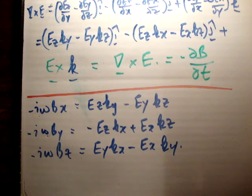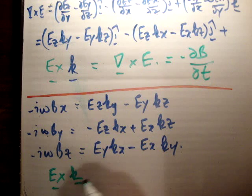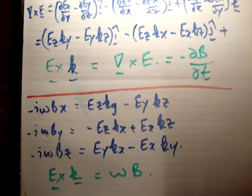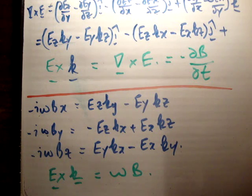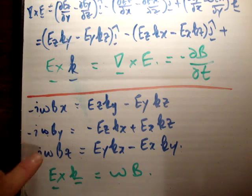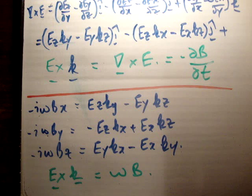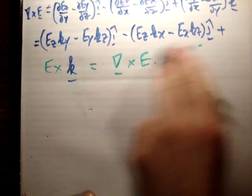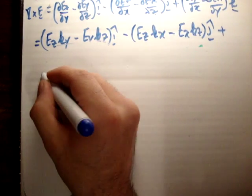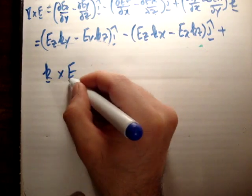As a result of those component equations, we find that k cross E is equal to ω times B. Looking at these expressions, you can see that the right-hand sides are the components of ω times B, because we have ω times each component. So the result is: k × E = ωB.